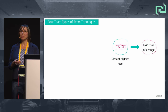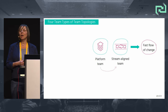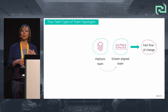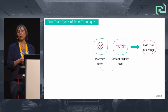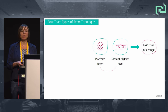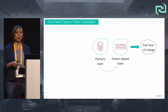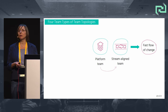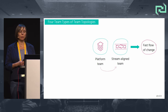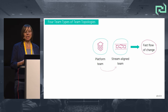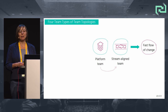To be able to focus on a fast flow of changes, stream-aligned teams need support from other teams — for example, from platform teams. Platform teams support the stream-aligned teams delivering their work and are responsible for platforms that the stream-aligned teams can easily consume. The platform itself can vary in its level of abstraction: at a lower level it can abstract away infrastructure, cross-cutting, and networking capabilities; at a higher level it can abstract away a design system or a data platform.